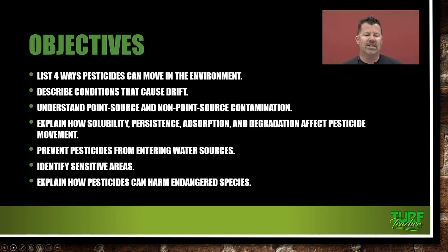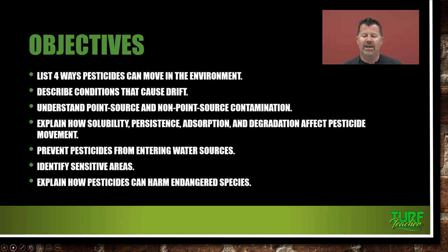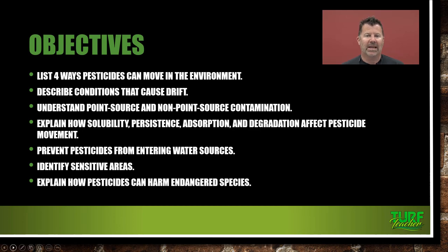We're going to list four ways pesticides can move in the environment. We're going to describe conditions that cause drift. We're going to understand point source and non-point source contamination. We're going to explain how solubility, persistence, adsorption, and degradation can affect pesticide movement. We're going to prevent pesticides from entering water sources — we don't want them in our drinking water — so we've got to pay close attention to these details. We'll identify what sensitive areas are, and then explain how pesticides can harm our endangered species.